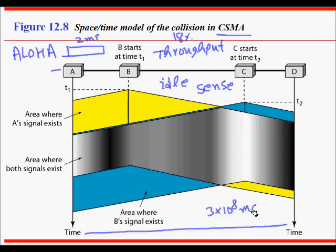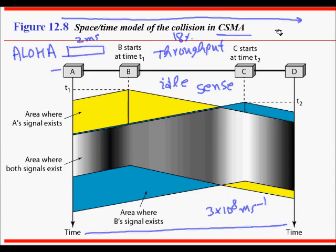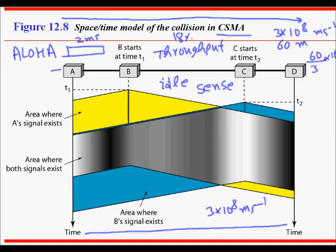If you start transmission here, it takes some time for the bit to travel all the way across. For example, with a speed of 3×10⁸ m/s and a LAN wire of 60 meters, the time taken for a bit to travel from one end to the other is distance divided by speed: 60 divided by 3×10⁸ seconds, which is 0.02 microseconds. This is called propagation delay — it is not zero.